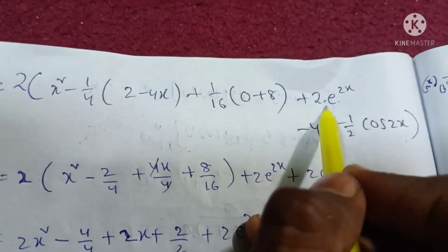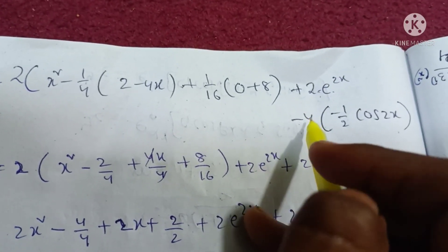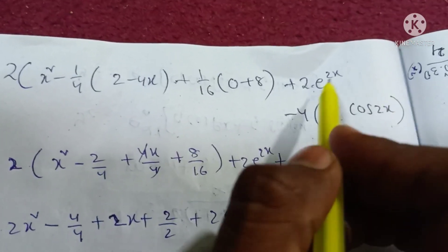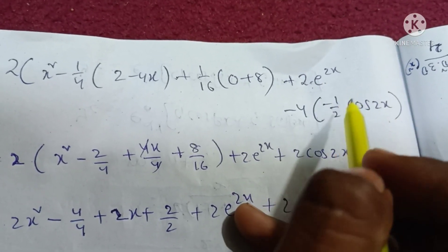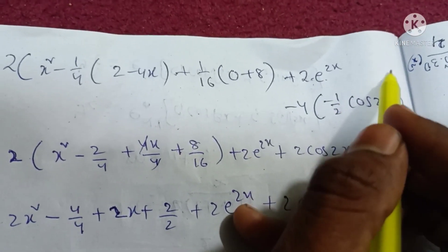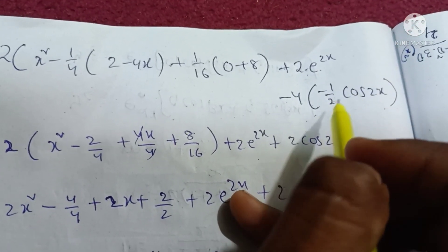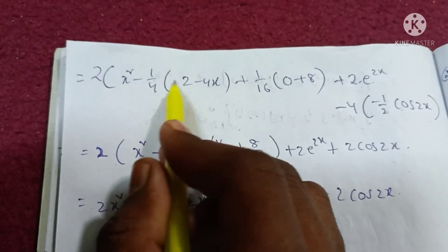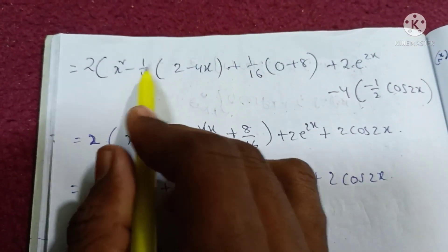2 into 4, 2x. For sin 2x, using the formula: minus 1 by a, a into a, ax is 2, so 2 into cos 2x. Then 2 into x squared, 2 into 2 by 4, and plus minus minus plus 4, giving 4x by 4.